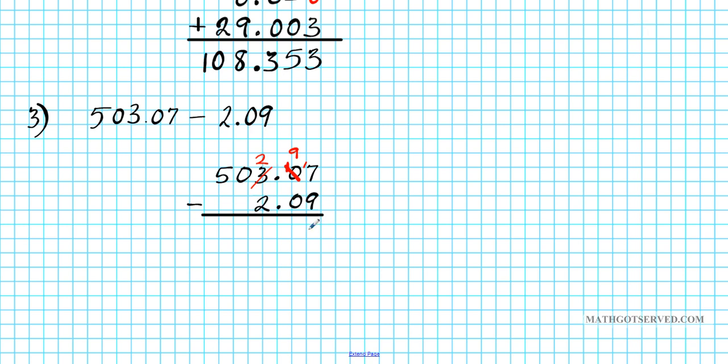17 take away 9, that's 8. 9 take away 0 is just 9 for two decimal points. See how it's lined up perfectly. 2 take away 2 is 0. 0 take away 0 is 0. And then 5 take away 0 is 5.